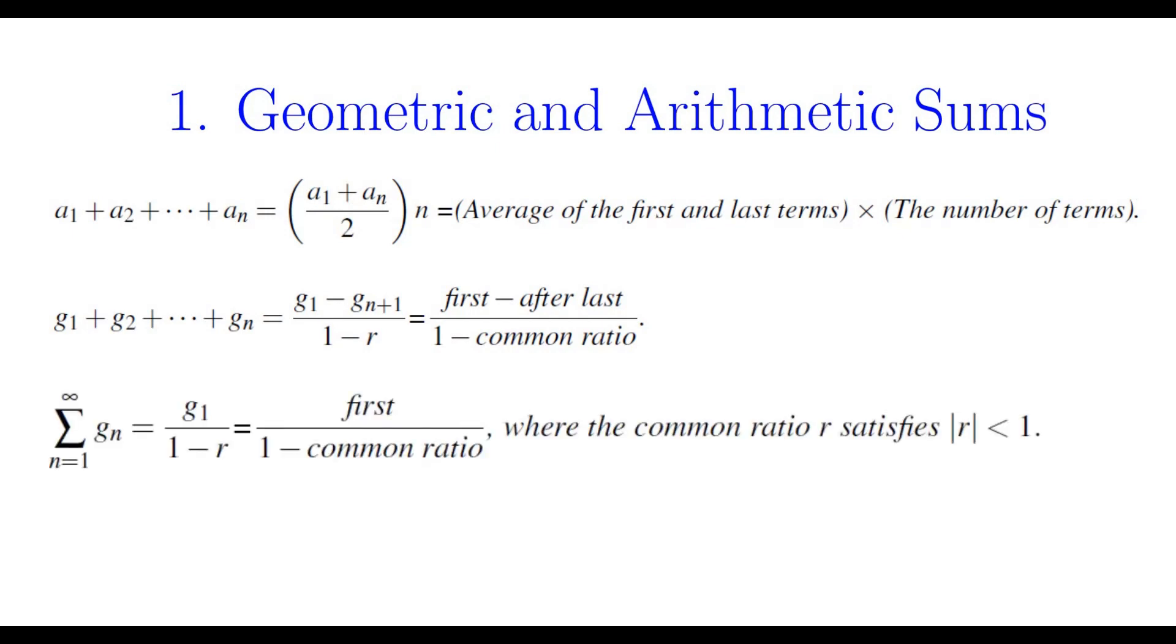If you are given an infinite geometric sum, the sum would be the first term divided by 1 minus common ratio, as long as the common ratio is between negative 1 and 1. I have an example on this technique and I'm going to put the link on the upper right corner of the screen and you can check that out. This is the sum that I have evaluated in that video.